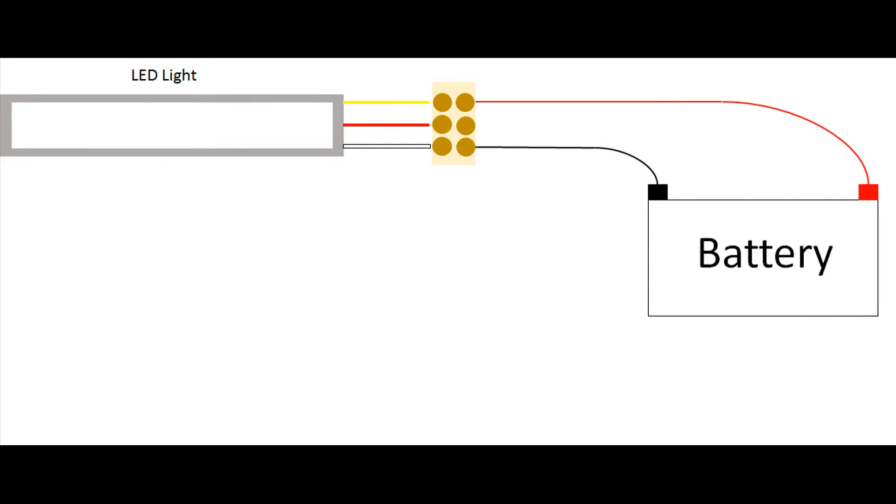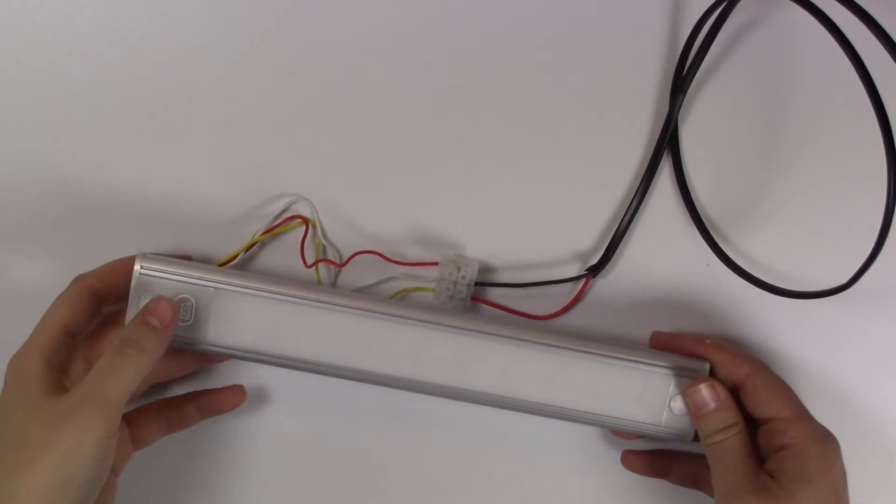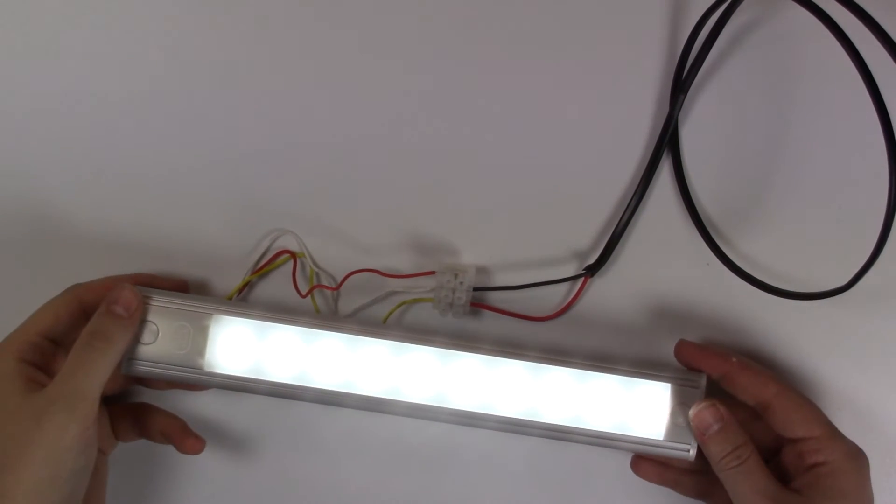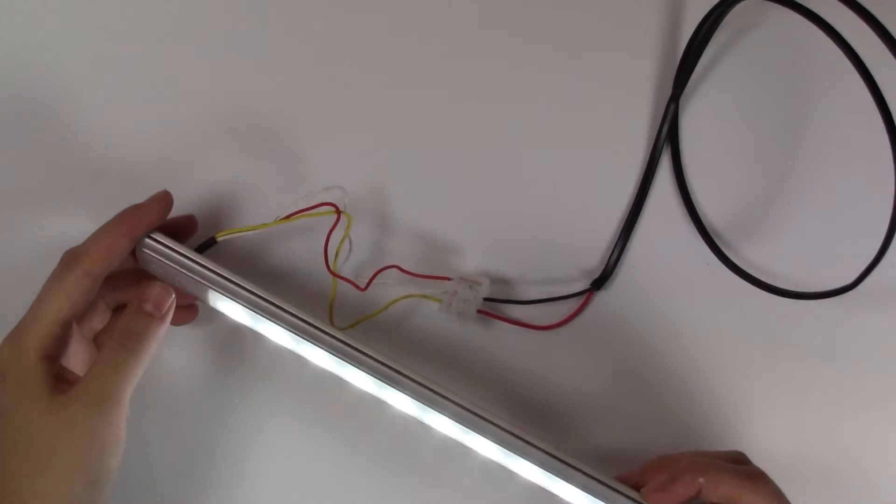Firstly you can see by this diagram to use the touch switch we are going to connect the power to the yellow cable and return to the white. This just enables you to use the touch switch which comes attached to the light itself and as you can see in this clip very easy to use.